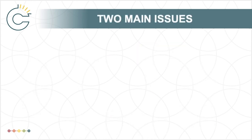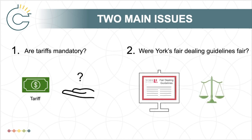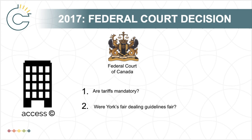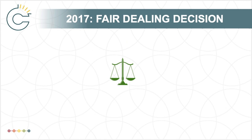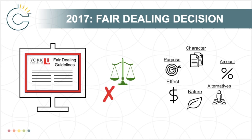The two main questions in this case are: is the interim tariff issued by the Copyright Board mandatory, even for institutions not under a license with the collective? And can all copying done by York under its guidelines be considered fair dealing? The federal court decision was reached in 2017, when the Federal Court of Canada delivered a complete victory in favor of Access Copyright. The court rejected York University's approach to fair dealing and concluded that the interim tariff was in fact mandatory and enforceable against the university. Let's break down the arguments and how the federal court came to this decision, starting with the fair dealing assessment. Justice Michael Phelan found that York's fair dealing guidelines did not pass the six-factor test for assessing whether a dealing is fair.